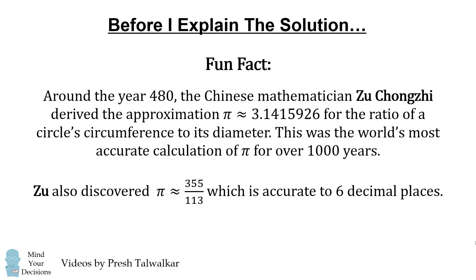Before I explain the solution, I just want to present a fun fact. Around the year 480, the Chinese mathematician Zu Chongzhi derived the approximation pi is approximately equal to 3.1415926 for the ratio of a circle's circumference to its diameter. This was the world's most accurate calculation of pi for over 1,000 years. Zu also discovered the rational approximation of 355 over 113, which is accurate to six decimal places. So with that in mind, let's go ahead and solve this problem.